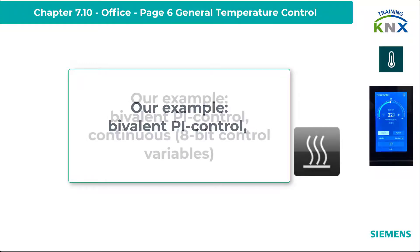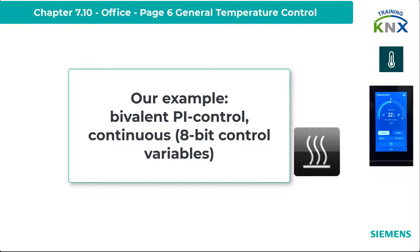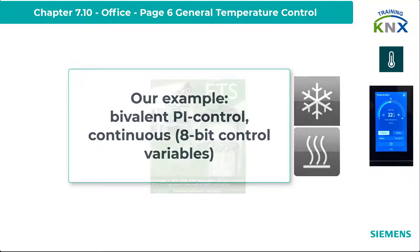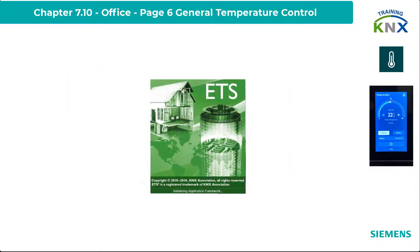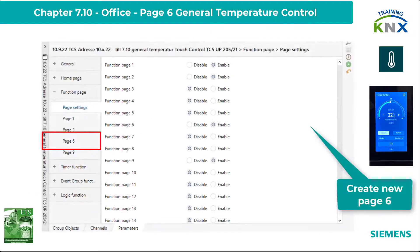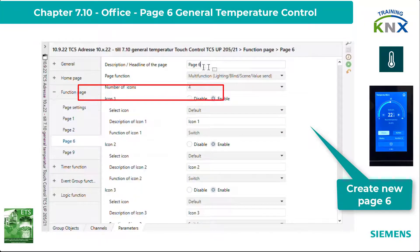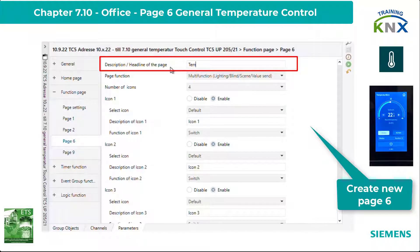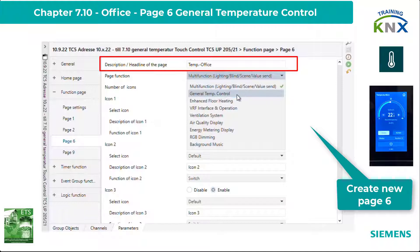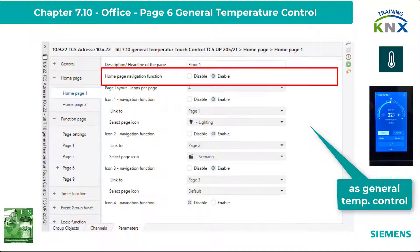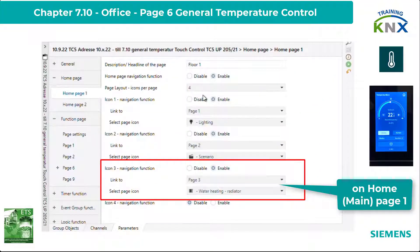That is the option where both a heating and a cooling circuit are controlled separately. First, I create again a new page in the parameters: function page 6. I assign the appropriate heading — 'Temperature Office' — and page function: General Temperature Control. This page is included as a third call on the main page 1.